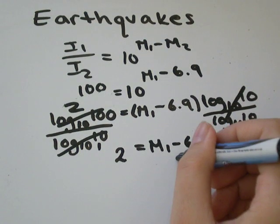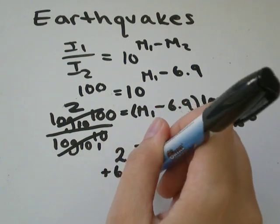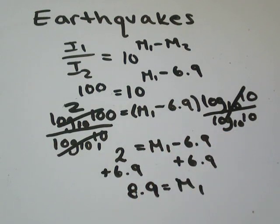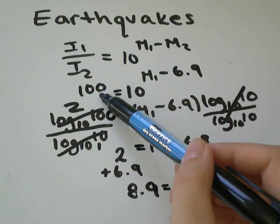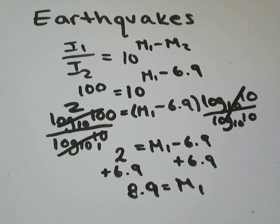To figure out what M1 is, I'll just add 6.9 to both sides, and I'll get 8.9 equals M1. So an earthquake that is 100 times more intense than a magnitude 6.9 would be a magnitude 8.9.